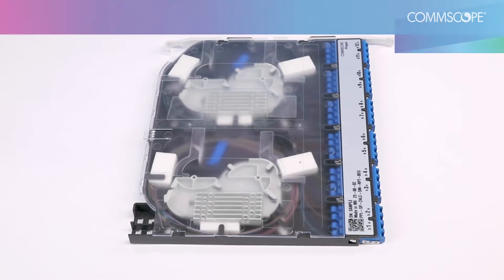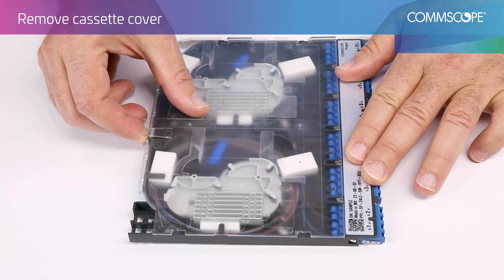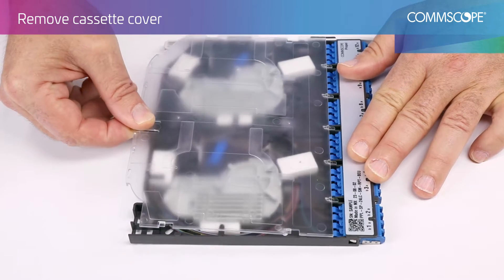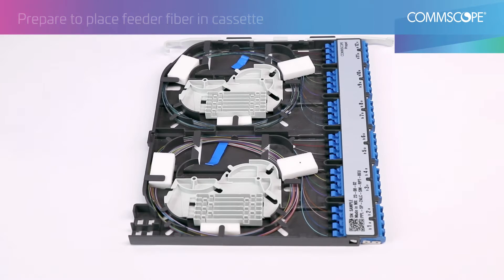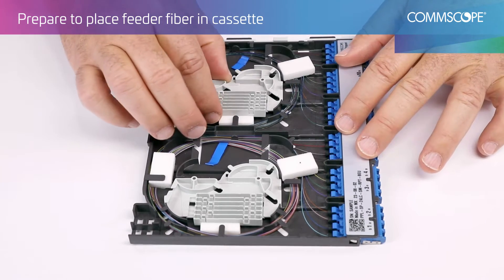Using thumb and finger, disengage the rear tab by lifting and pulling backward to remove the cover. Remove the spools and splice holders from the cassette.